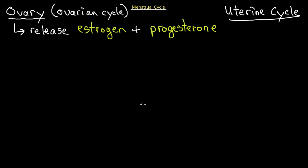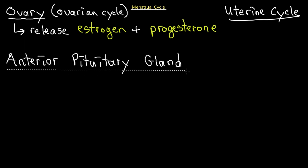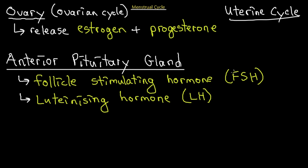The other system that releases hormones contributing to the menstrual cycle is the anterior pituitary gland, located in the brain just underneath the hypothalamus. It releases two hormones: follicle stimulating hormone (FSH) and luteinizing hormone (LH). These are the names I will use interchangeably for the rest of this lecture.